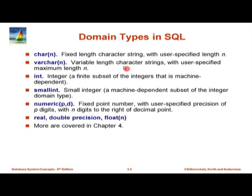Now what happens if I have one char(10) and one varchar(10) and I store 4 characters — say 'Rama' — in both of them? Are they equal or not? It turns out it is database dependent. On Oracle they are not equal, because 'Rama' in char(10) is really 'Rama' followed by 6 spaces, whereas 'Rama' in varchar(10) is just 4 characters, and Oracle will tell you they are not equal. If you really want to check if they are equal you have to do other stuff like trim. So do not mix these two types up. My recommendation is to stick to varchar if you are using Oracle.